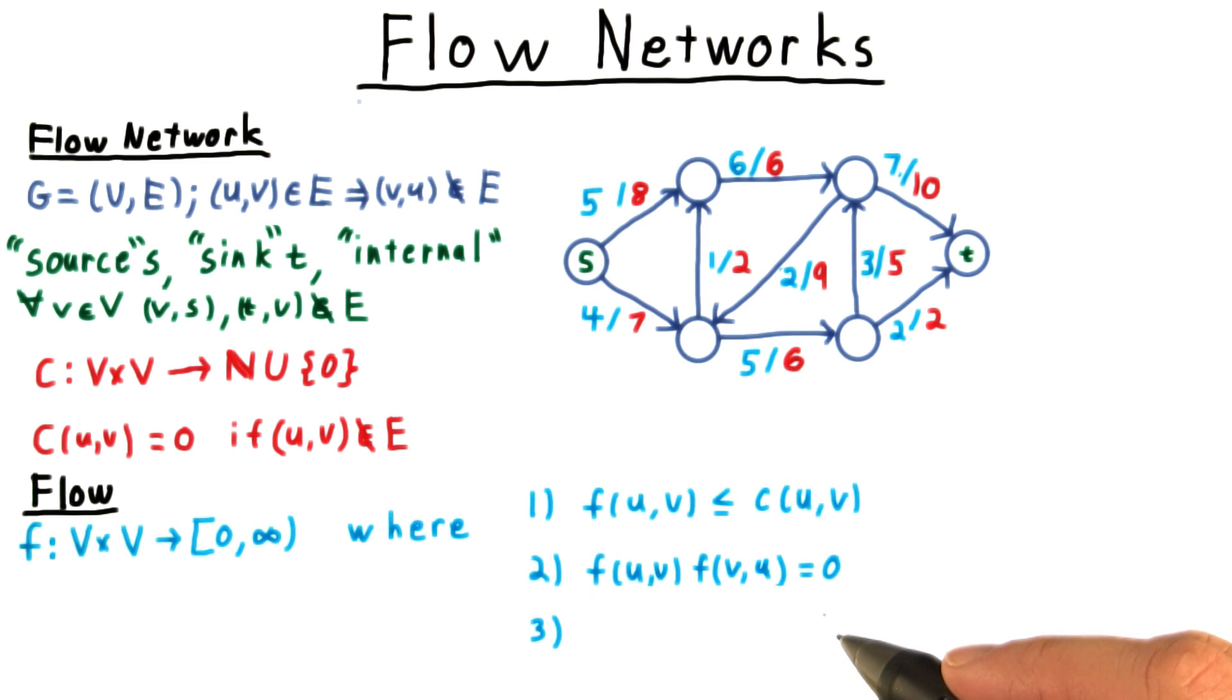That's the flow network. The flow itself is a function from pairs of vertices to the non-negative reals. Clearly then, it must be non-negative, and it can't exceed the capacity for any pair of vertices.